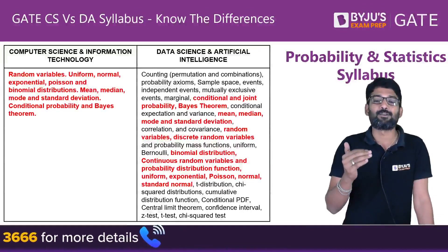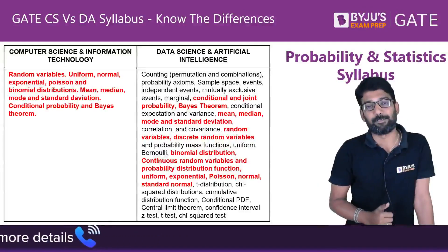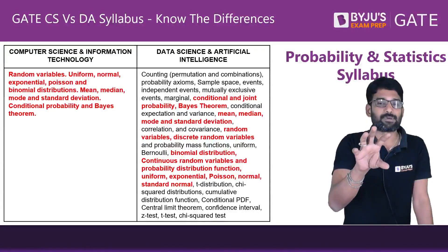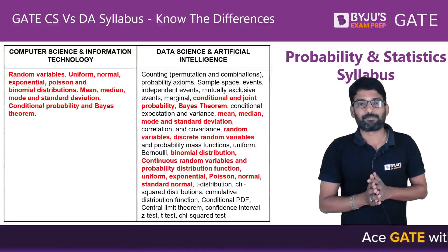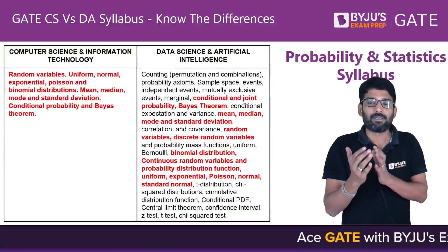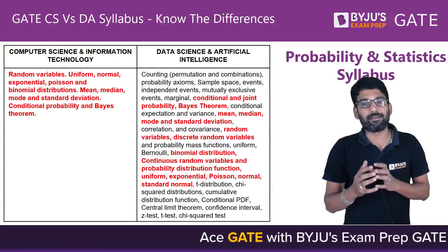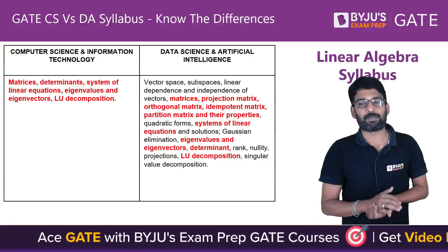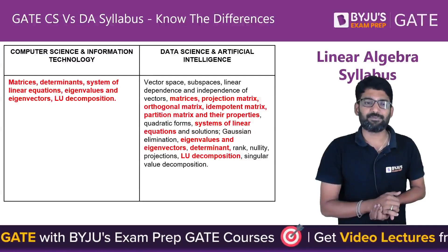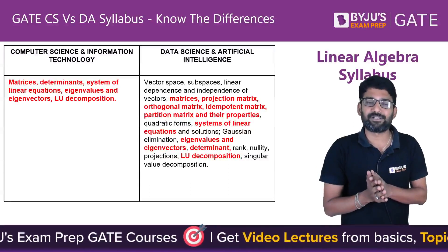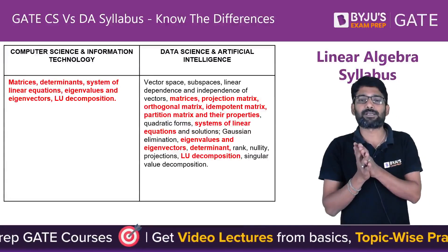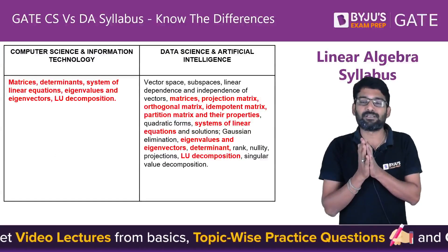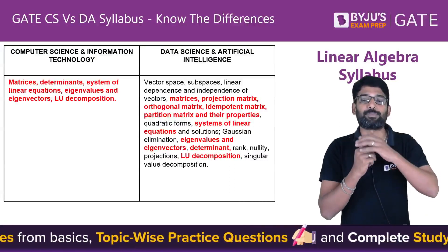The additional DA topics are highlighted in red. Multiple extra topics are present in DA compared to CS. Similarly for Linear Algebra: in CS and IT we have matrices, determinants, system of linear equations, eigenvalues and eigenvectors, and LU decomposition. Those same topics are present in DA as well, along with some additional topics.